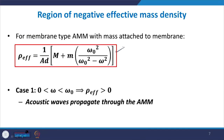Let us now find the region where negative effective mass density occurs. In the expression for rho_effective, all prefactors are positive; the sign is determined by the bracketed term. When ω < ω₀, the denominator (ω₀² − ω²) is positive, so the whole bracketed quantity is positive. Overall rho_effective > 0, and acoustic waves propagate through the metamaterial.